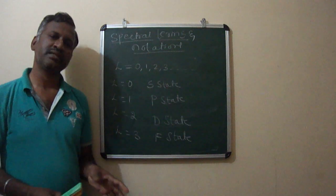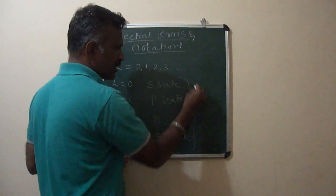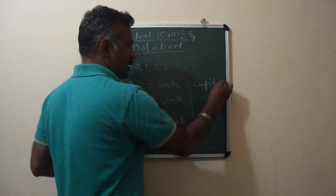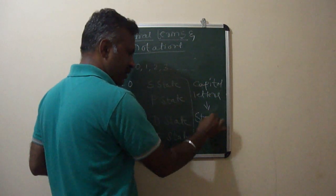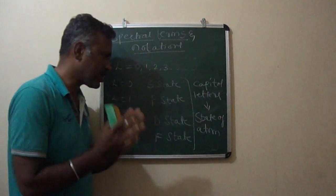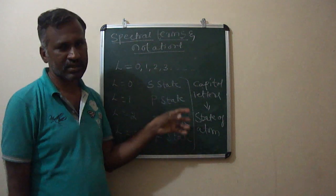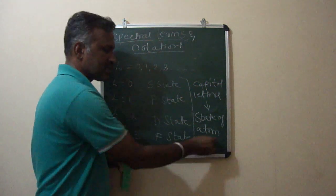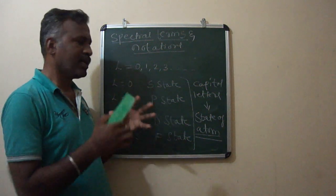Remember, students — whenever you write in capital letters, capital letters will always denote the state of the atom, and small letters will always denote the state of an electron. Whenever you write anything regarding spectral terms or spectral notations, capital letters denote the state of the atom and small letters represent the state of the electron.